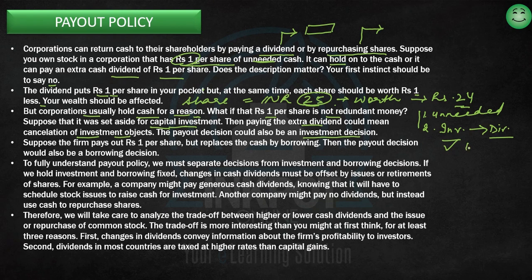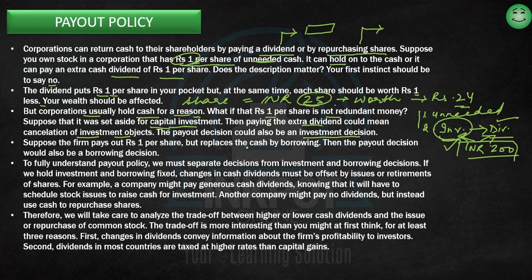For example, if I have 200 rupees and instead of investing it, I release it as dividends, I'm saying I will not use this money for that investment. I'm making an investment decision, not a payout decision — I'm deciding whether to carry out that investment or not.